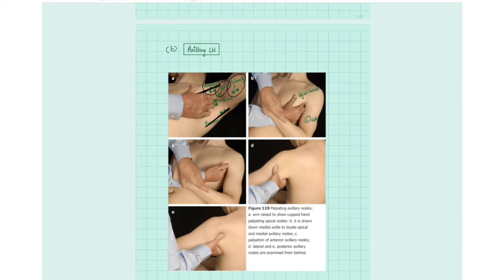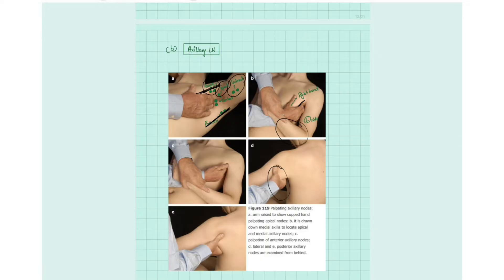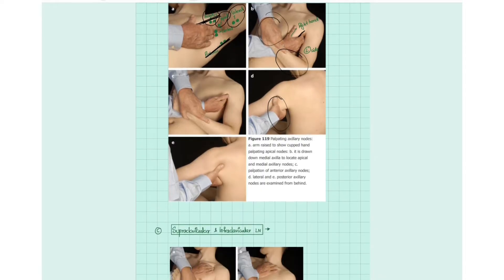To palpate the right axillary lymph nodes, you ask the patient to rest their arm over the doctor's right arm. The doctor then uses the right hand to palpate the anterior lymph nodes along the anterior axillary fold, then the central nodes, apical nodes, and posterior nodes. For the lateral nodes, you can go behind the patient and palpate with the right hand, or stand in front and palpate with the left hand.